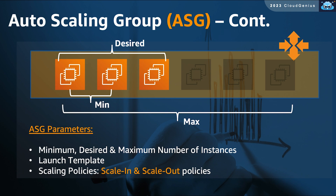To create an ASG, you need to specify some parameters. First, you need to define your launch template — this is the template used for dynamically launching all EC2 instances belonging to the ASG. Second, define the desired number of instances in the group, the minimum number you cannot go below, and the maximum number you cannot exceed. Lastly, define the scaling policies: the scale-out policy and the scale-in policy.